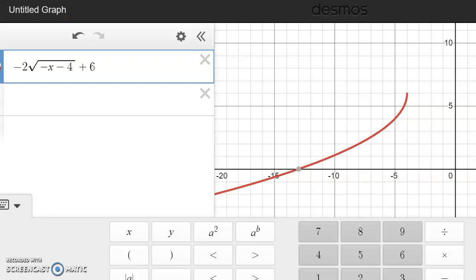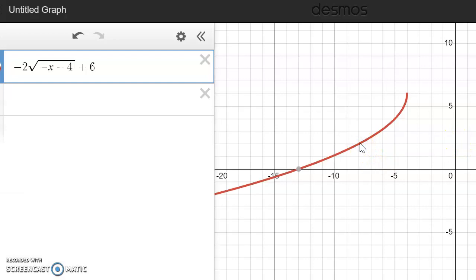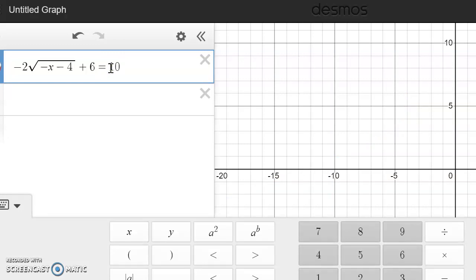I went ahead and went to Desmos so that you could see why there is no solution for this question. The answer we got was x equals negative 8, so that is going to be right here, x is negative 8. If we go to the graph at x is negative 8, we get a y value of 2. And in our equation, remember, we had it equal to 10.